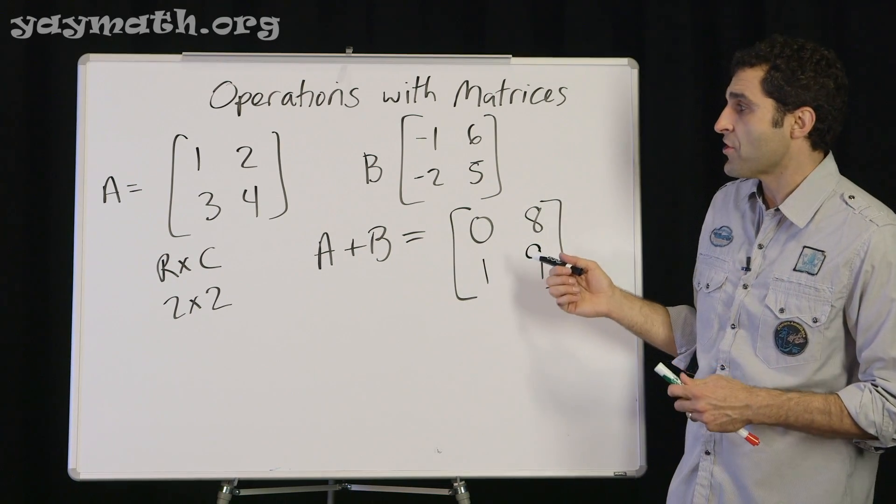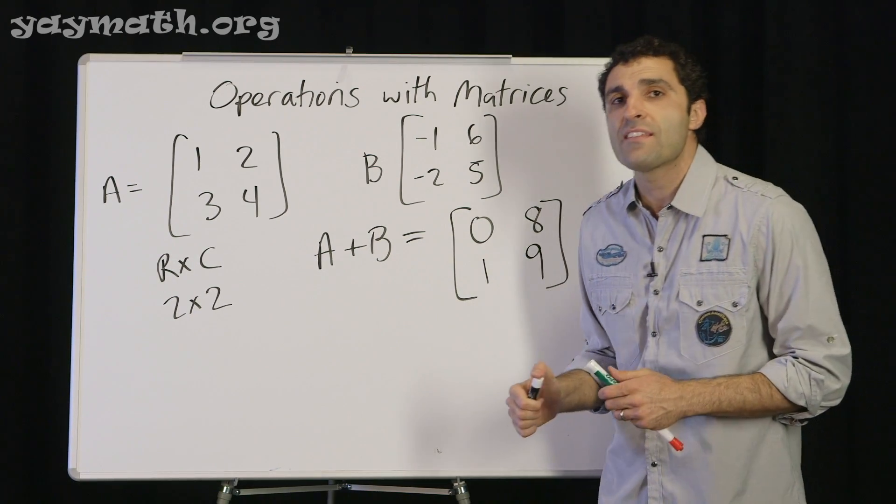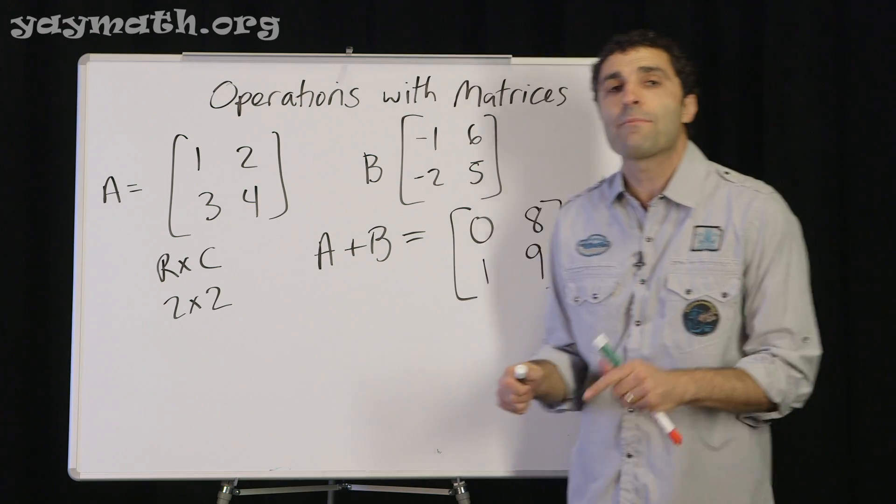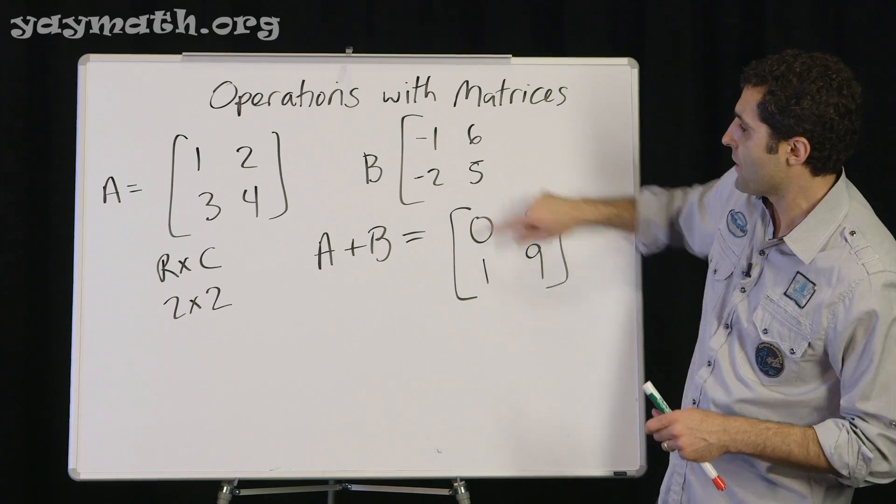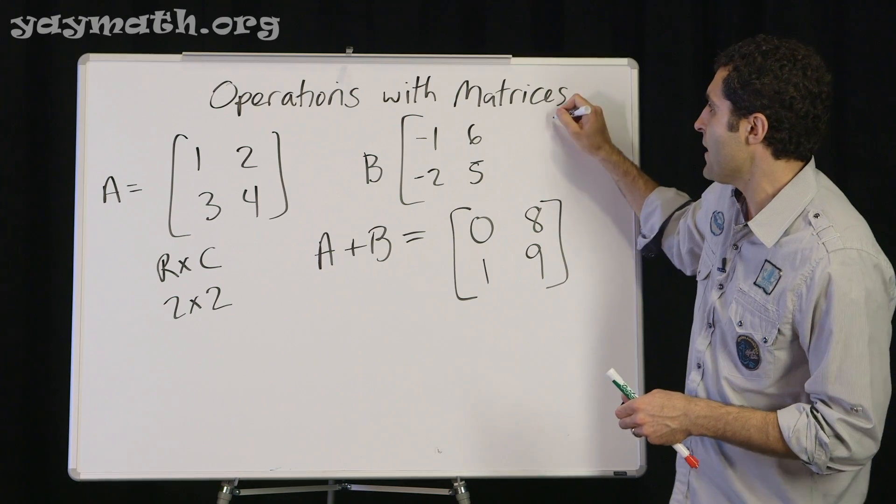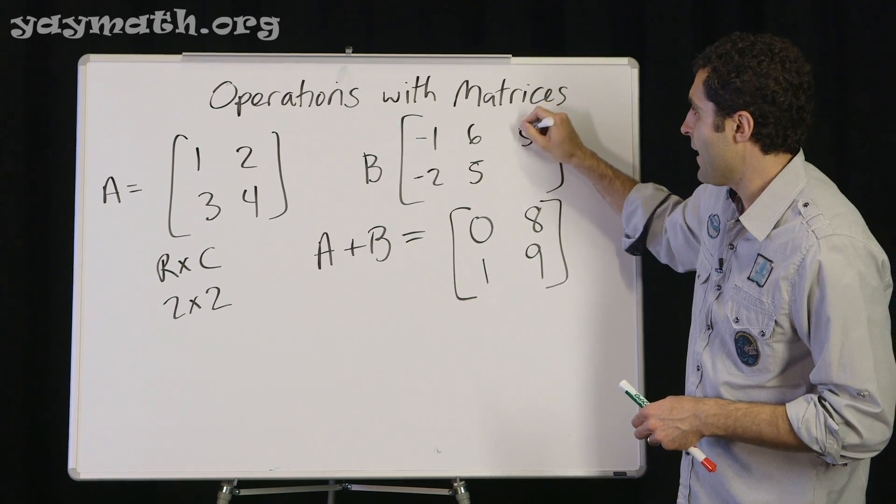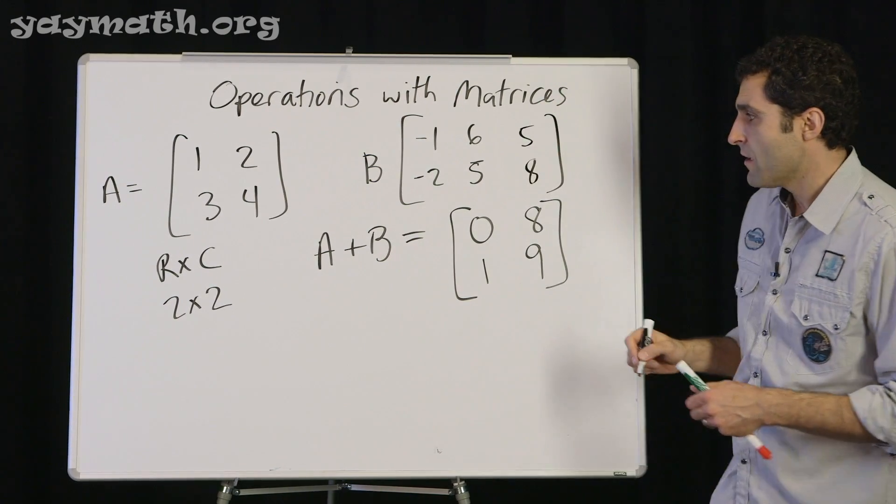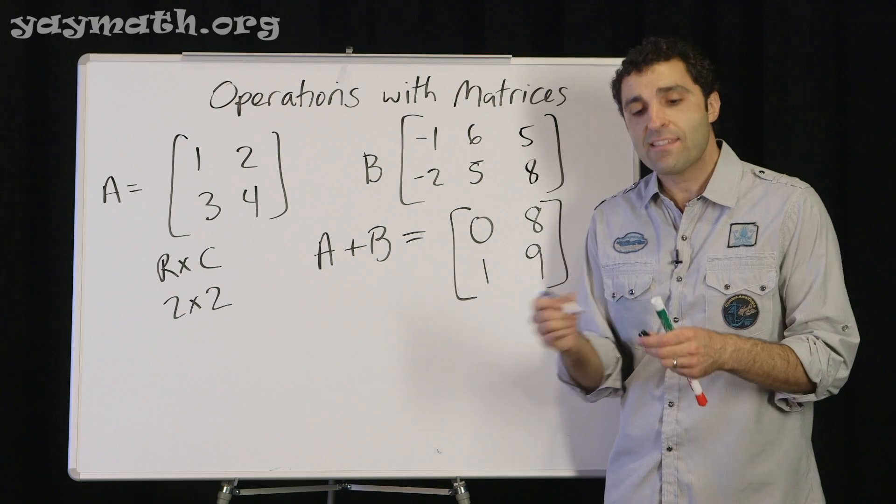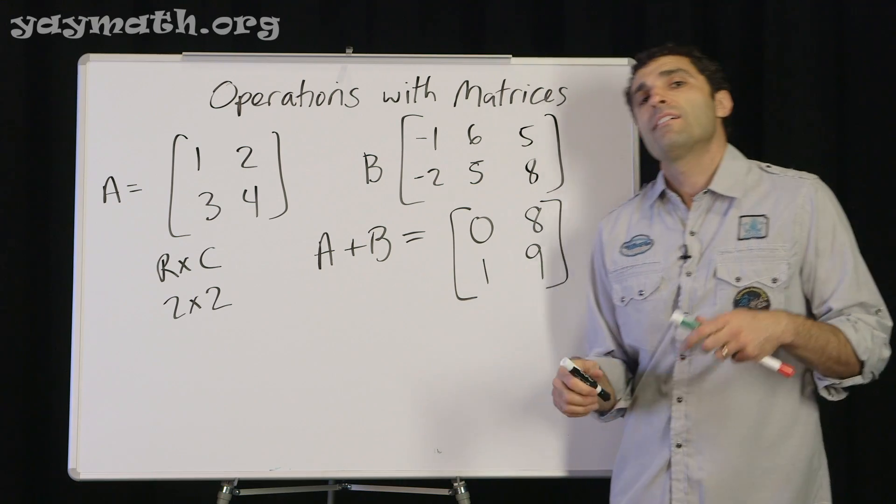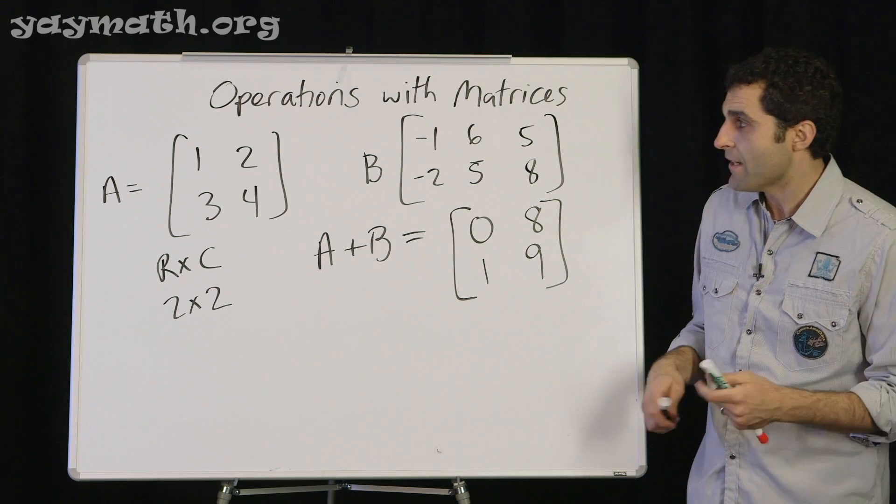It also begs the question, can you add two matrices that are not of the same dimension? Let's say for example, we're going to go over here and say that B was now five, eight. Over here. Could you do A plus B in this case, Keanu? No, you can't. You can't. It doesn't work.